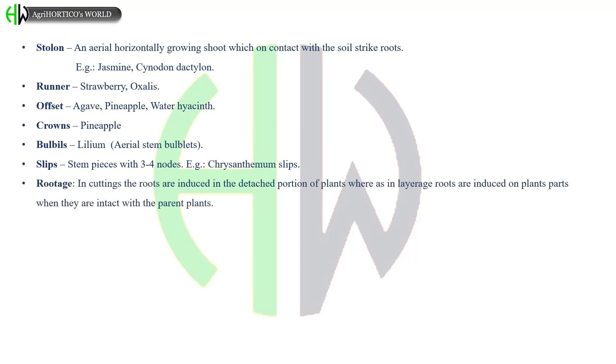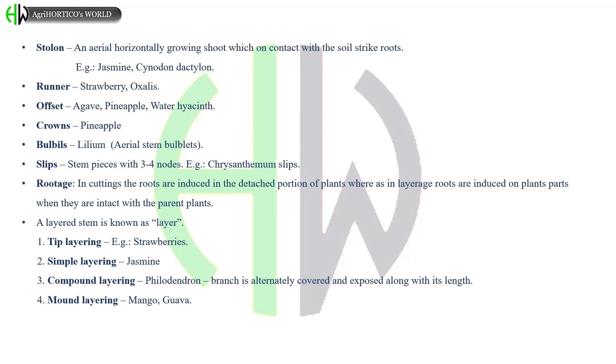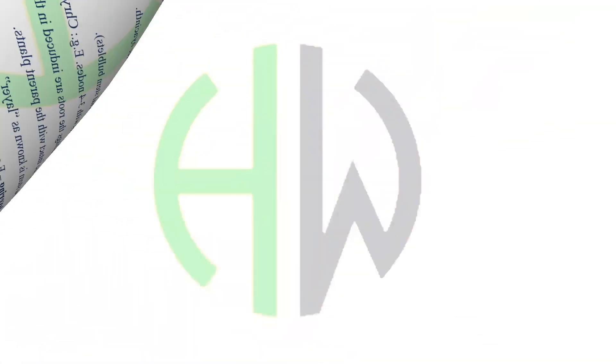Rootage or rooting: in cuttings the roots are induced in the detached portion of plants, whereas in layering roots are induced on plant parts when they are intact with the parent plants. A layered stem is known as layer. Types of layers are tip layering in strawberries, simple layering in jasmine, and compound layering in philodendron. In this, branch is alternately covered and exposed along with its length. Mound layering in guava. The best season to take cutting is from middle of July to middle of February.